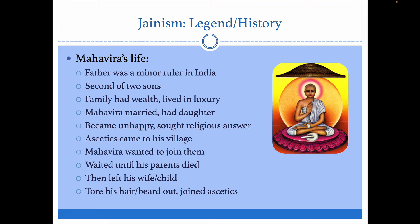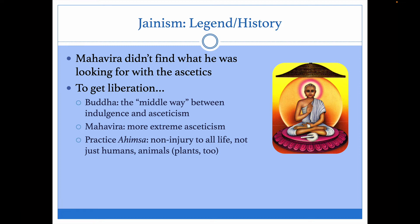This is where it starts to change — the Mahavira's life and the Buddha's diverge. Ascetics came to the Mahavira's village, and he wanted to join them, but waited until his parents died. He then left his wife and daughter, tore his hair and beard out, and joined these people devoted to self-negation. He ultimately didn't find what he was looking for with them because they weren't extreme enough. The Buddha suggested a middle way between self-indulgence and self-denial. The Mahavira said no — we're going all in — and advocated for a more extreme asceticism.